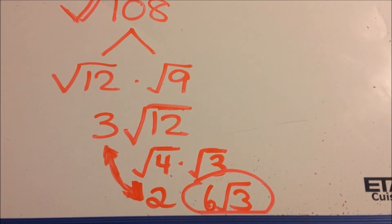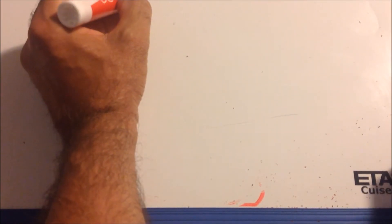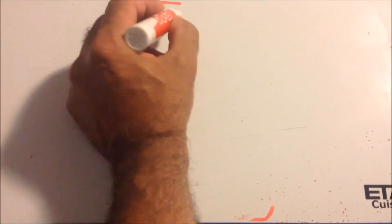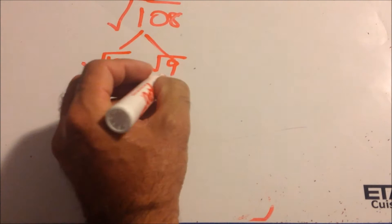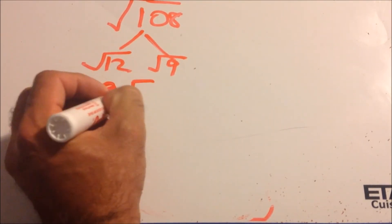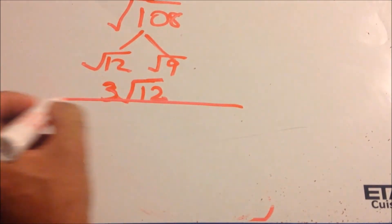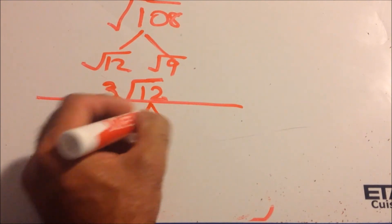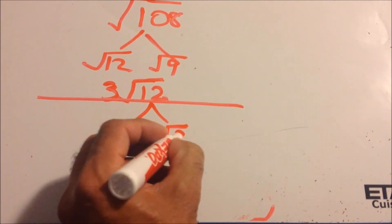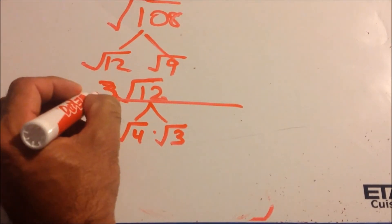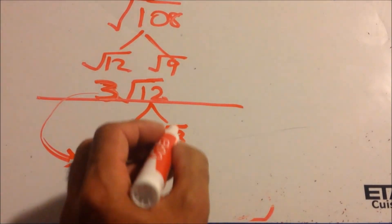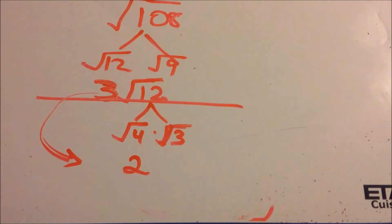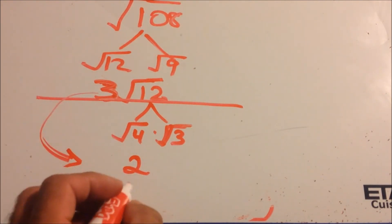Let me redo that one more time. The square root of 108: we write it as the square root of 12 times the square root of 9. The square root of 9 is 3 — that's free. Then the square root of 12 equals the square root of 4 times the square root of 3. We already have a 3 that's free — put an arrow to remind yourself. The square root of 4 is 2. So we have 2 and 3; multiply them: 3 times 2 is 6. Final answer: 6 square root of 3.